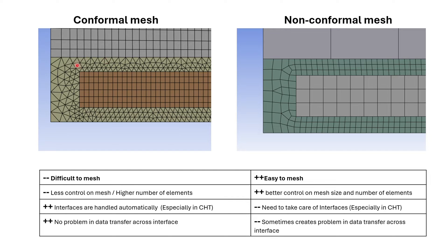To match these nodes you have to refine the region on this side. In non-conformal mesh you can have a much coarser mesh on the solid side and a finer mesh on the liquid side.